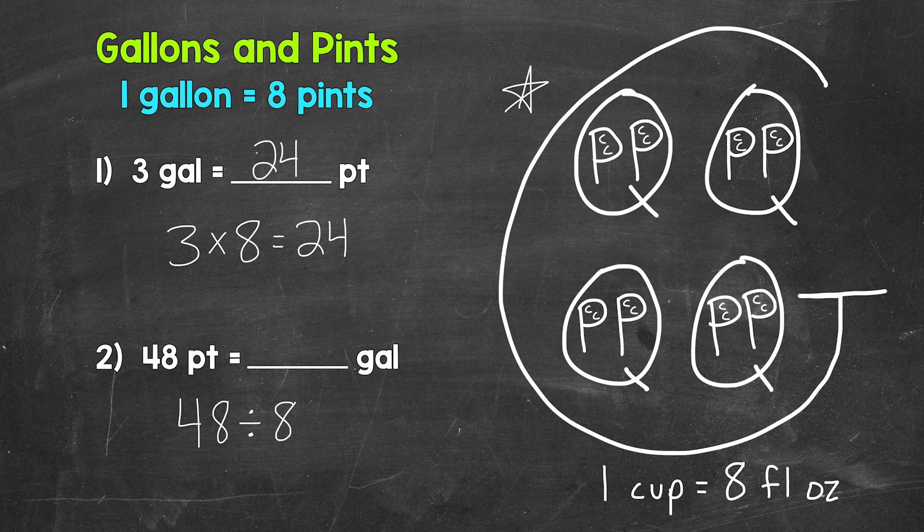When we go from pints to gallons, we divide by eight. 48 divided by eight gives us six. 48 pints equals six gallons.